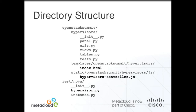This is the directory structure for a typical Horizon dashboard — in this case an OpenStack Summit dashboard with a hypervisors panel. In client-side rendering, your focus is on index.html where the view is defined, hypervisorscontroller.js where the controller is defined, and then the RESTful endpoint, hypervisor.py in this case.